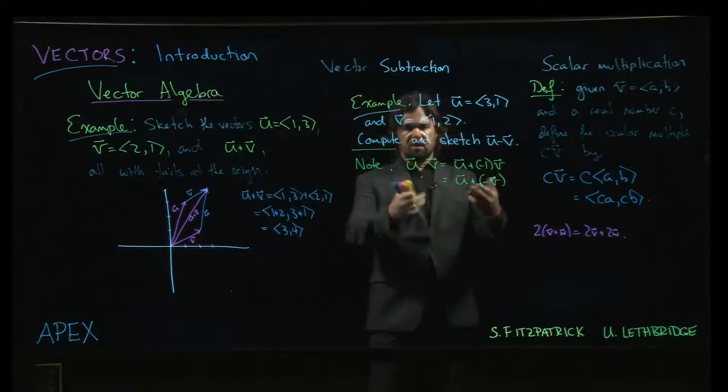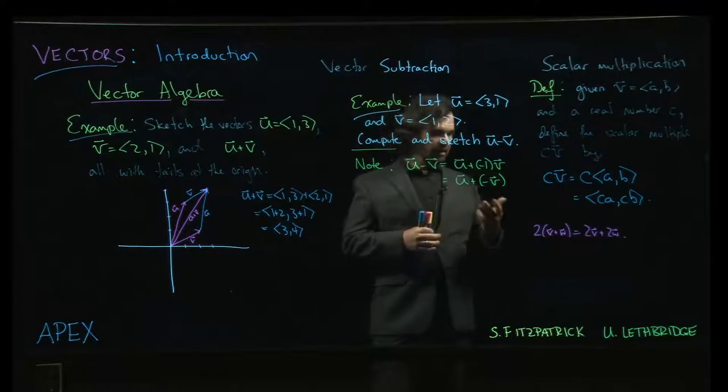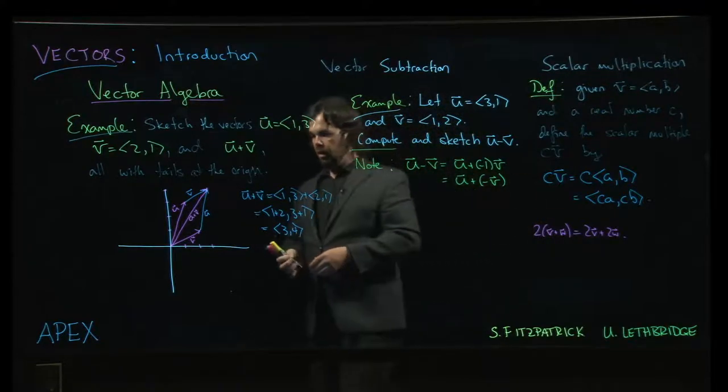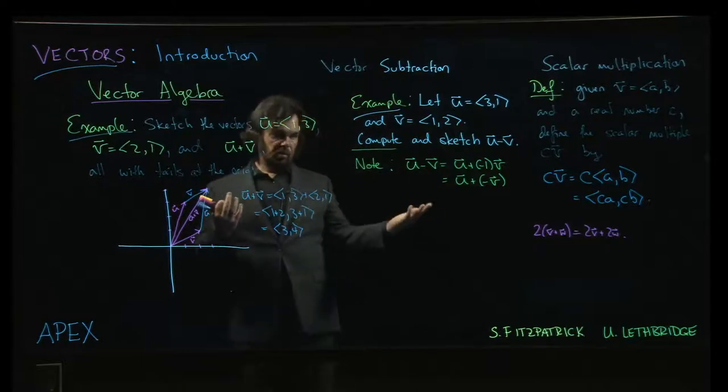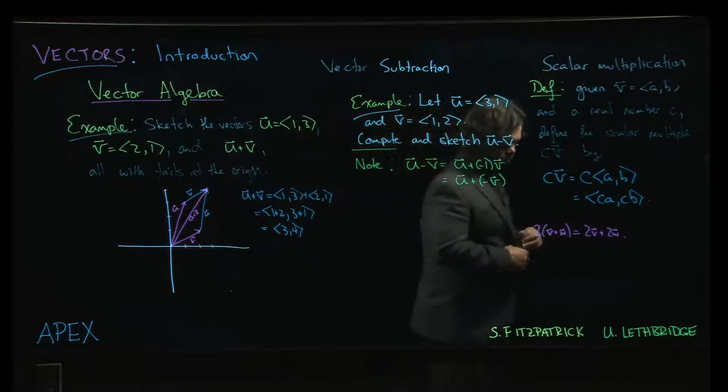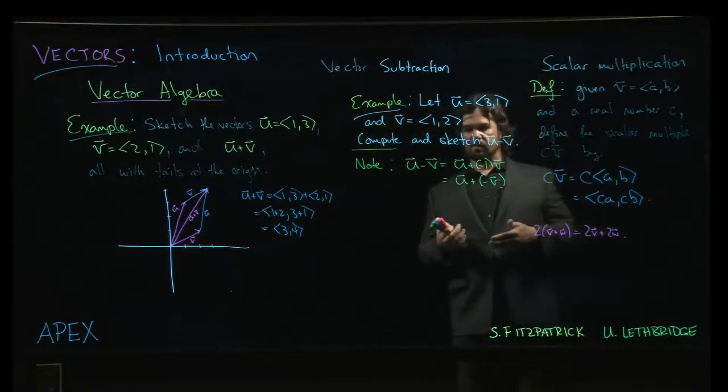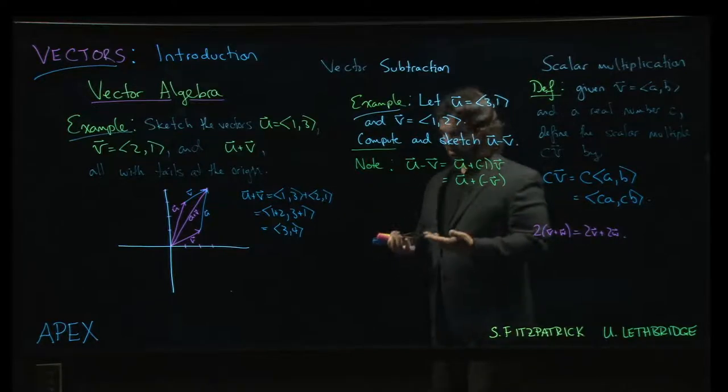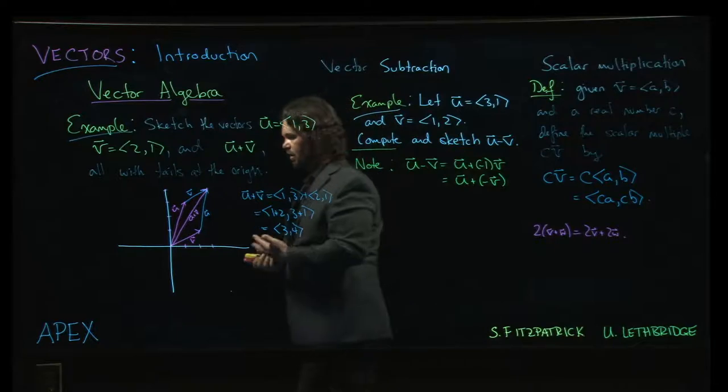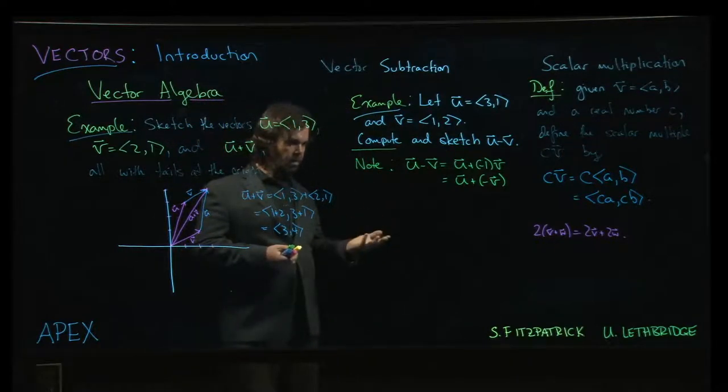And this definition makes sense if you want your algebra to be consistent. If you want to have rules that work like the distributive property, this is sort of what you need to have. If you want every vector to have a multiplicative inverse, every vector should have a negative. Two vectors that you add together to get zero. So you're kind of forced into this definition. We looked at that in a previous video.